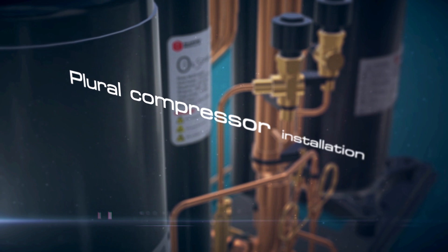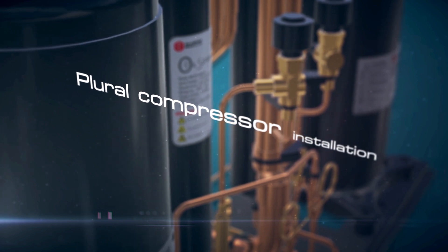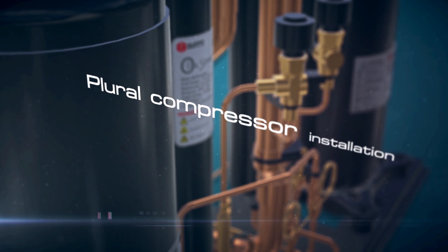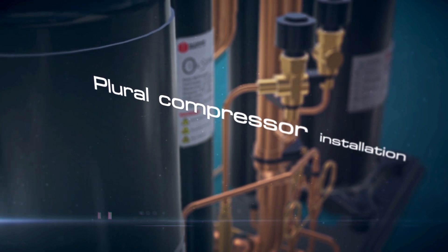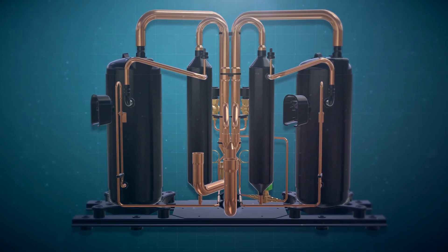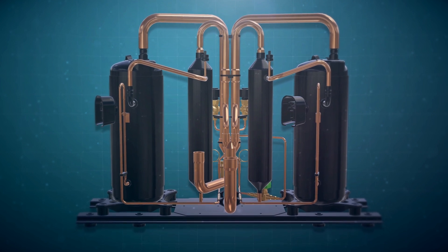In the system where multiple compressors are present, install one MUTO oil separator per each compressor as follows. The installation process is the same as single compressor installation.